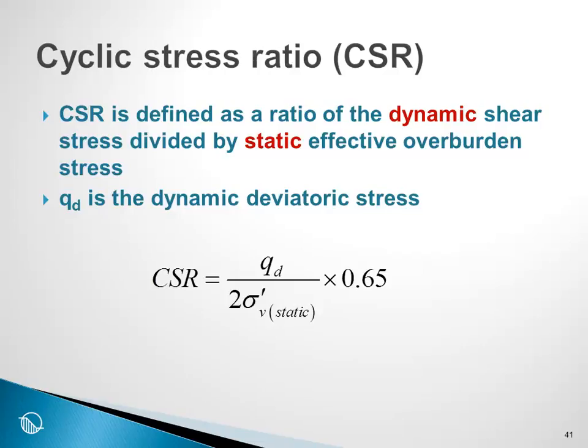Q sub d is the dynamic deviatoric stress. If you recall from a triaxial test, sigma 1 minus sigma 3 is the deviatoric stress. So half of the deviatoric stress is a measure of the shear stress, and we normalize the shear stress with respect to the effective overburden stress. This is multiplied by a factor of 0.65.